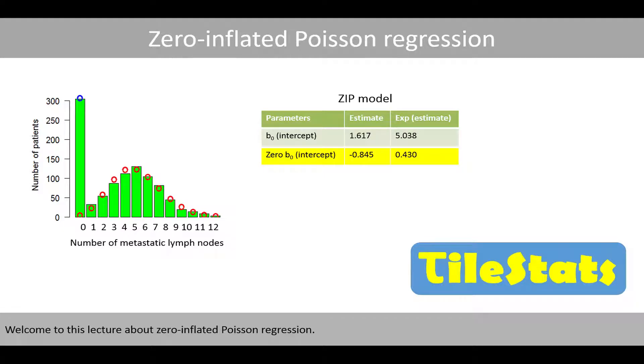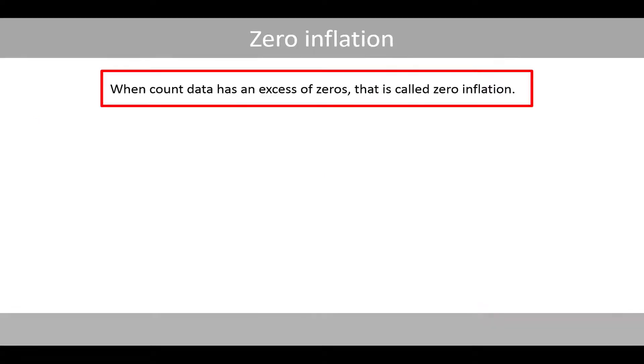Welcome to this lecture about zero-inflated Poisson regression. When count data has an excess of zeros, that is called zero inflation.